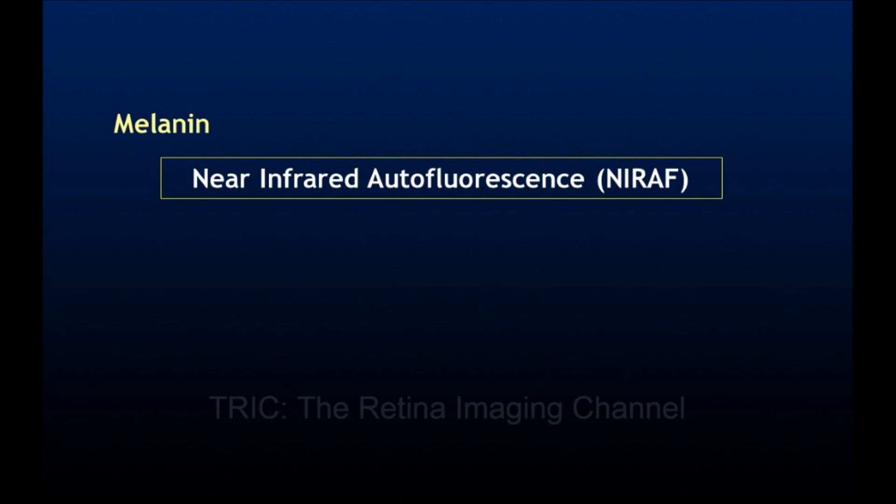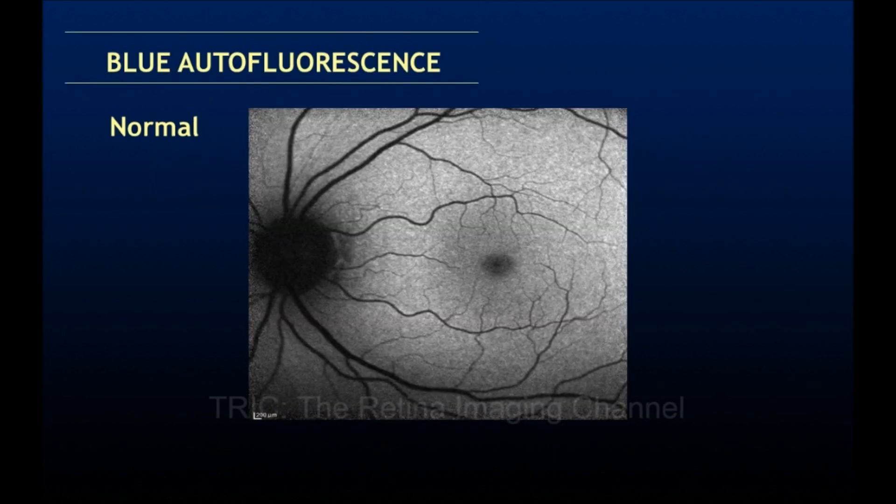It is important to know this distinction because both autofluorescence images look similar to a great extent but have different interpretations. In a normal blue autofluorescence image, the vessels are black and the retina is gray. Since lipofuscin is absent from the fovea, the fovea appears black, and the optic nerve is also black as there is no lipofuscin there either.